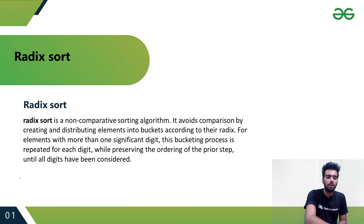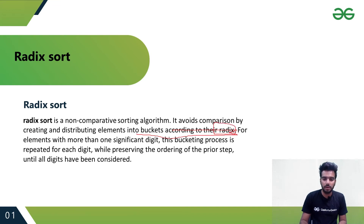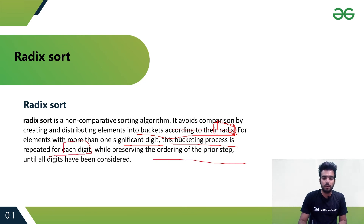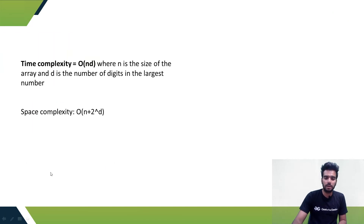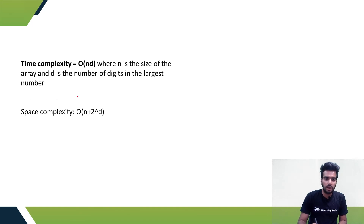Now let's see Radix Sort. Radix Sort is a non-comparative sorting algorithm that avoids comparison by creating and distributing elements into buckets according to their radix. For elements with more than one significant digit, this bucketing process is repeated for each digit while preserving the ordering of prior steps, until all digits have been considered.